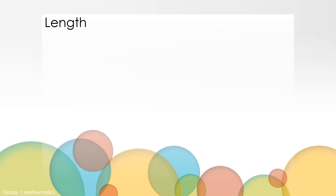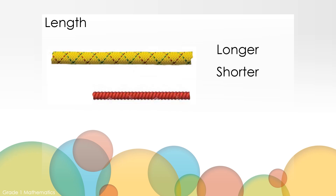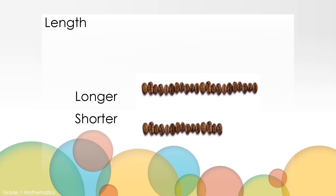We explored taller and shorter. Here are some more vocabulary words we can use to measure length. Sometimes we use the words longer and shorter. The yellow rope is longer. The red rope is shorter. The line of beans at the top is longer than the line of beans at the bottom. The beans at the bottom are shorter.